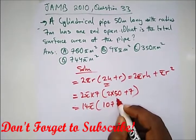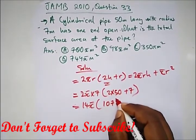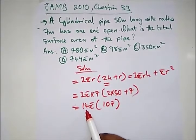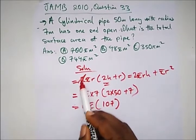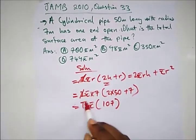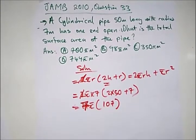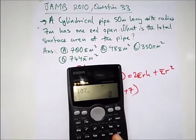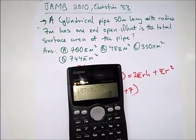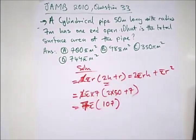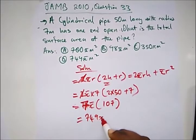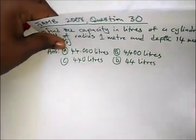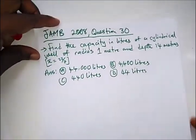So we have 14π times (50 + 7), which is 14π times 107. Then 7 times 107 gives us 749, so the answer is 749π meter square. The correct option is option D.